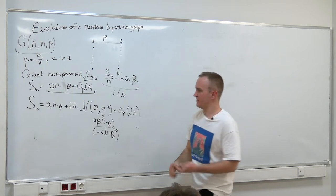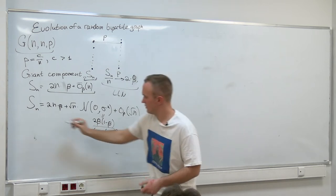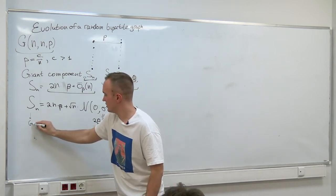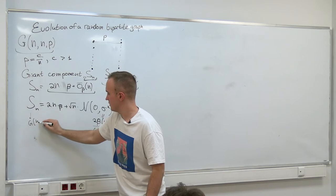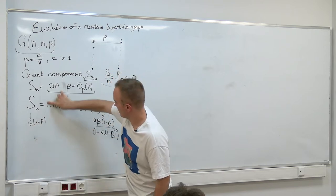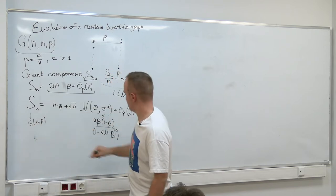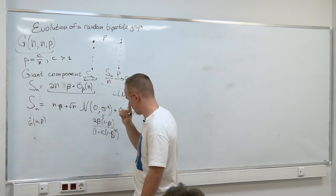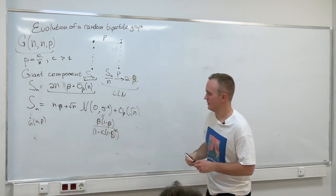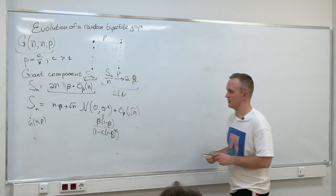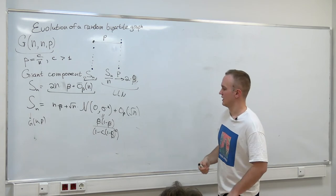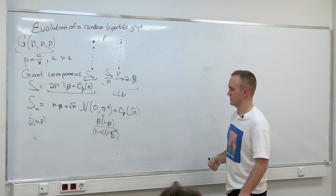If S_N is the size of the giant component of G(N,P), then we have just the same formula, and probably something like this too. So the variance of the second term and the expected value are twice as small, but somehow there is a big difference between the two results.